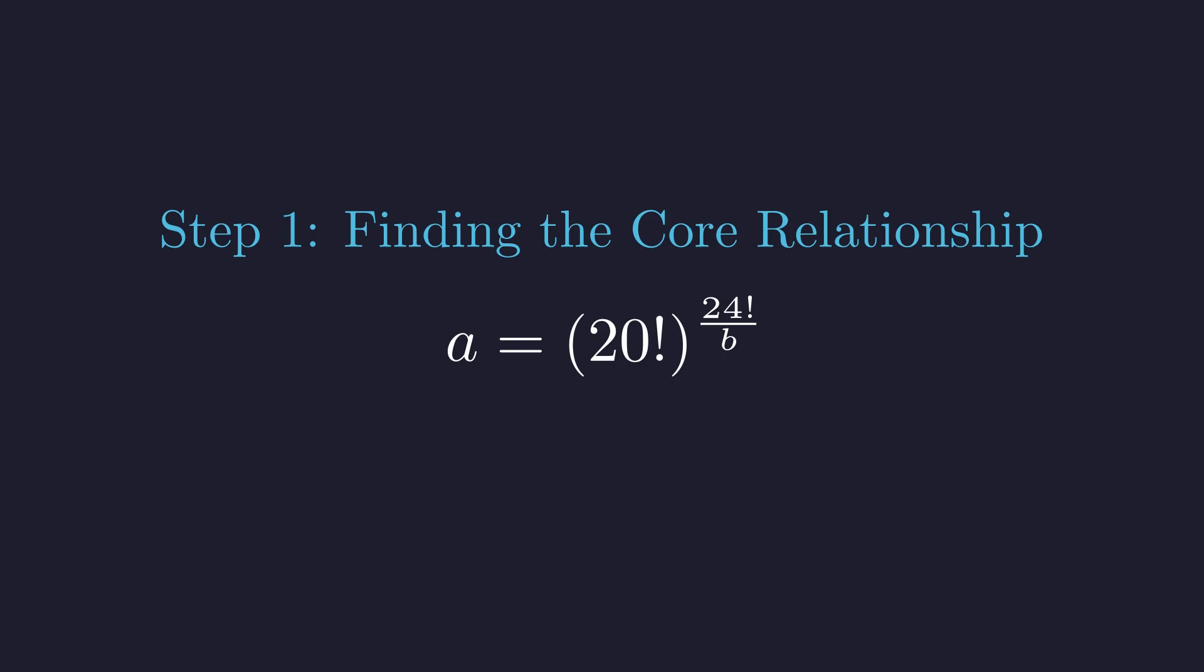Well, for any number to be a perfect K-th power, every prime in its factorization needs an exponent that's a multiple of K. But 20 factorial has the prime 19 appearing exactly once. Since one isn't divisible by anything bigger than itself, 20 factorial stubbornly refuses to be a perfect power. So our exponent must be a whole number.